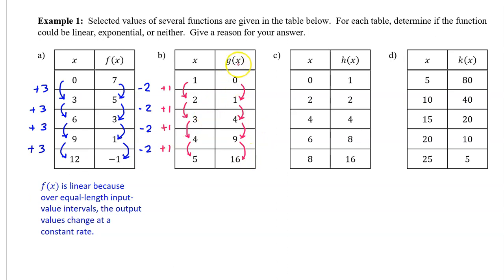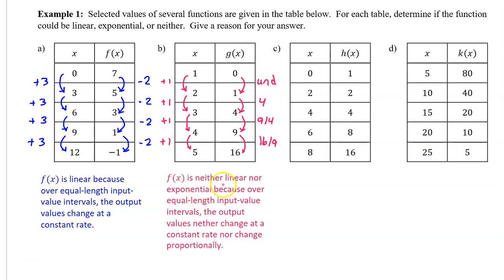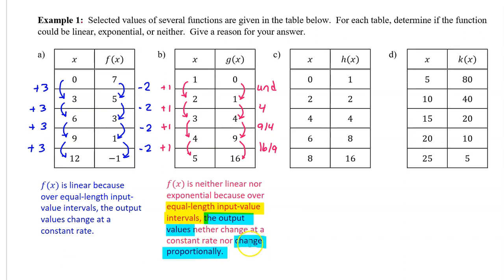To determine whether g of x is exponential, we look for a common ratio — that's each term divided by the previous term. 1 divided by 0 is undefined, 4 divided by 1 is 4, 9 divided by 4 is 9 fourths, and 16 divided by 9 is 16 ninths. So g of x is not exponential; we do not see a common ratio. For full credit, your justification should be: g of x is neither linear nor exponential because over equal length input value intervals, the output values neither change at a constant rate nor change proportionally. The function will be linear if the output values change at a constant rate, and exponential if the output values change proportionally.